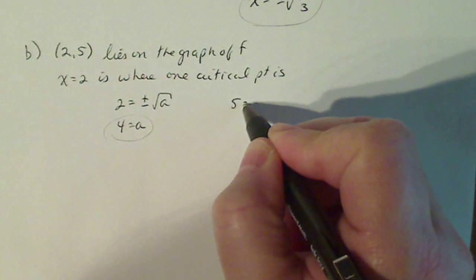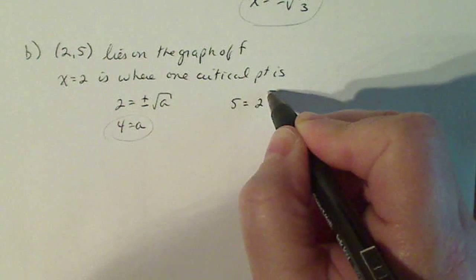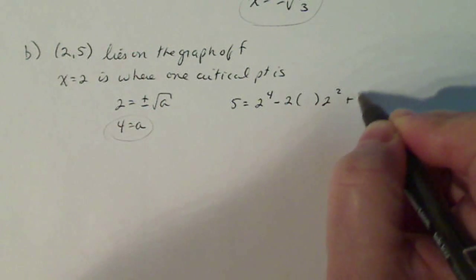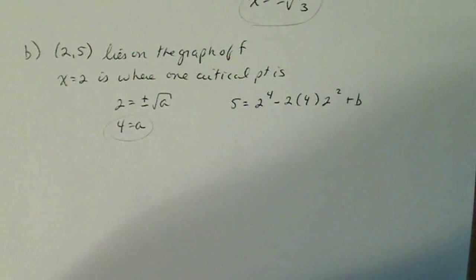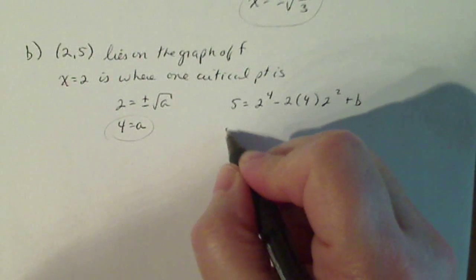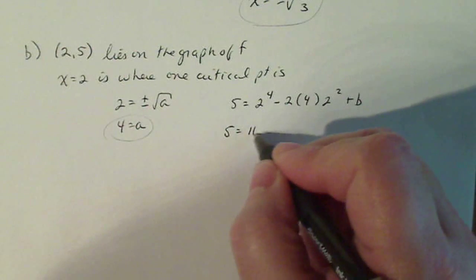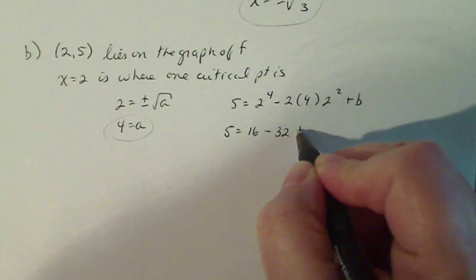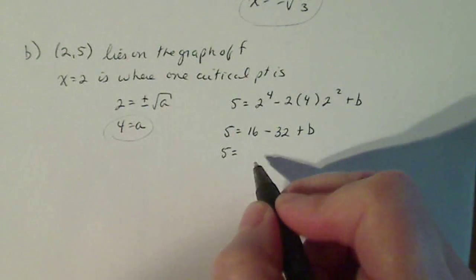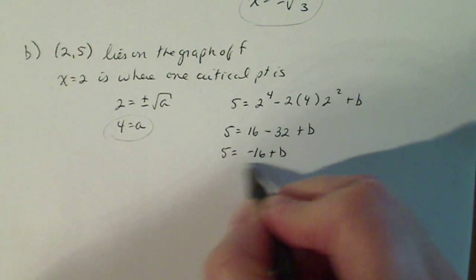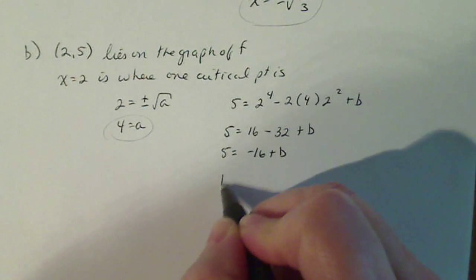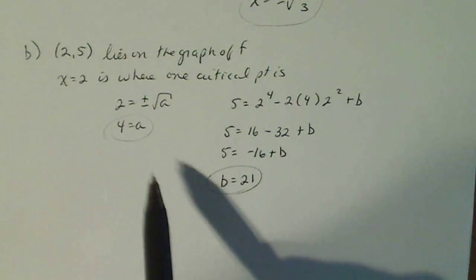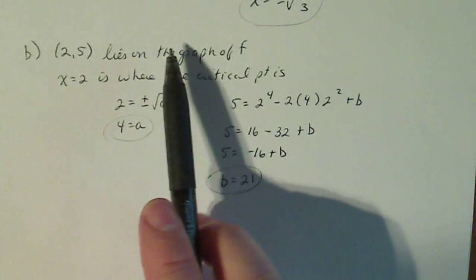So let's do that. So 5 for f(x) is equal to 2 to the 4th minus 2 times a times 2 squared plus b. I know a is 4, so I'm going to put 4 right in there. Now I'm going to solve for b. 2 to the 4th is 16 minus, so I have 2 times 4 is 8 times 4 is 32 plus b. 16 minus 32 is negative 16. Adding 16 to both sides, I have b is equal to 21. So I have found the values of a and b if I know that (2, 5) is a critical point.